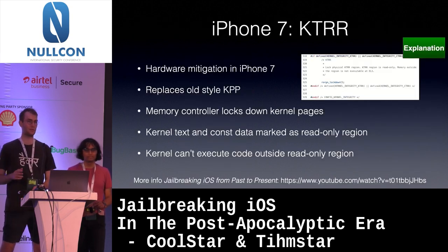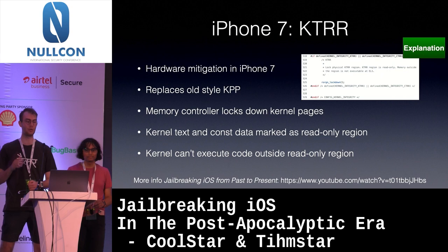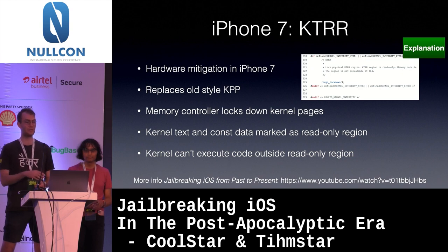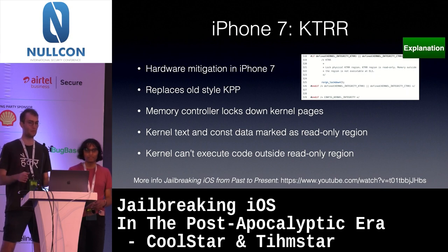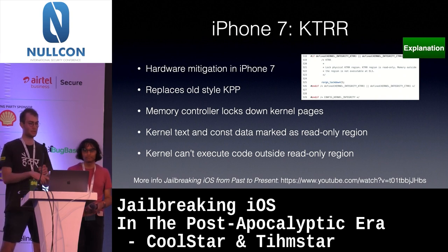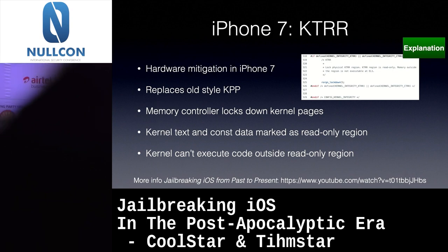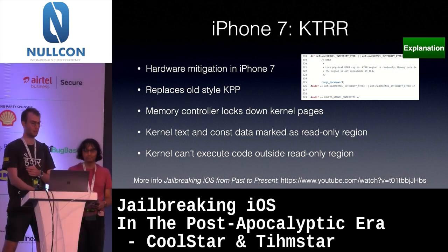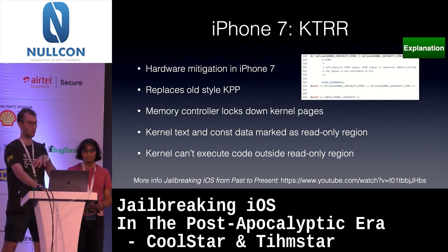Starting with the iPhone 7, Apple stepped up its game again. They introduced KTRR — Kernel Text Read-only Region — a hardware mitigation in the iPhone 7 which replaces the old-style KPP. It is a dedicated hardware memory controller which locks down kernel memory; if you try to write it, it will block the write at the hardware level. Additionally, you cannot execute code outside of that area, because only code inside that area will be executable. More info on that is in the companion presentation "Jailbreaking iOS," which is kind of part one.